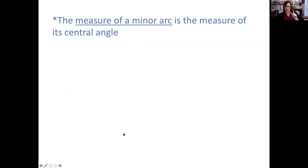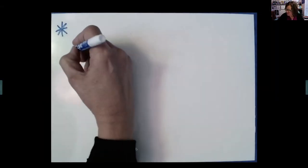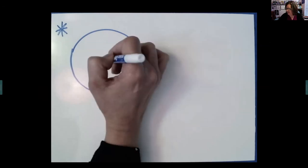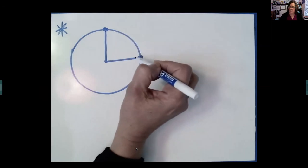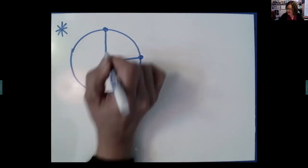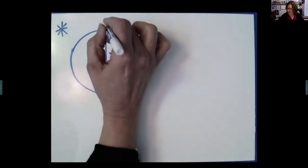Now let's talk about arc measure — this is our very most important idea. The measure of an arc equals the measure of the central angle that cuts that arc — specifically, the arc that's in the interior of the angle. Whatever this angle measure is, that arc has the same measure.